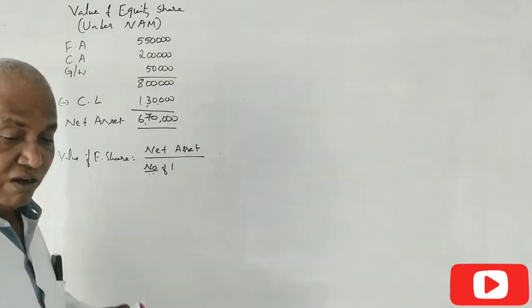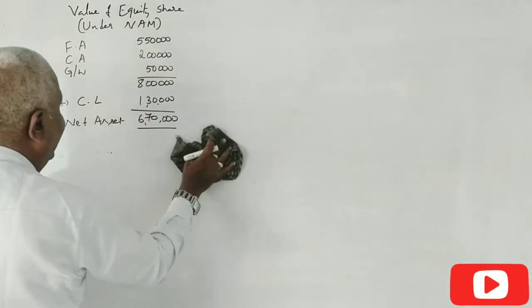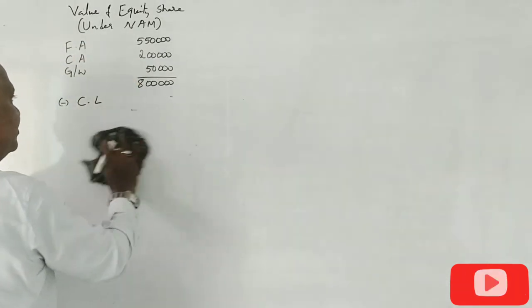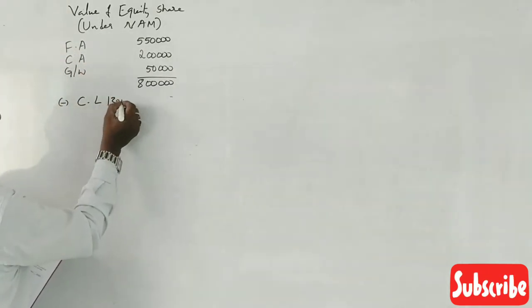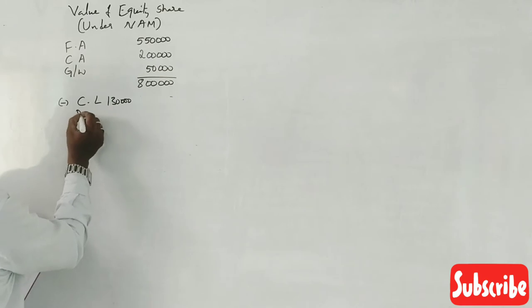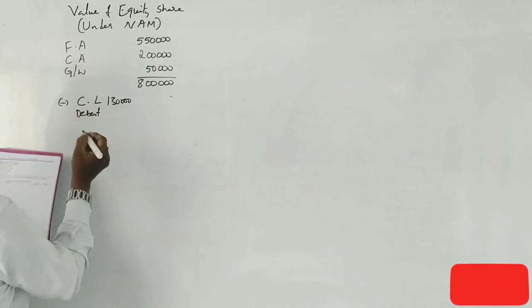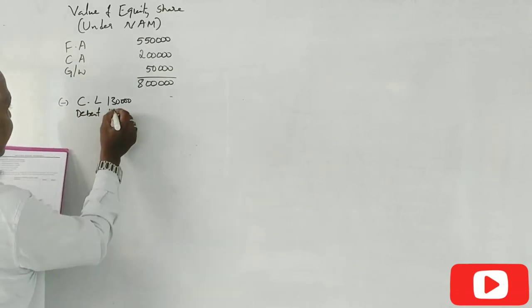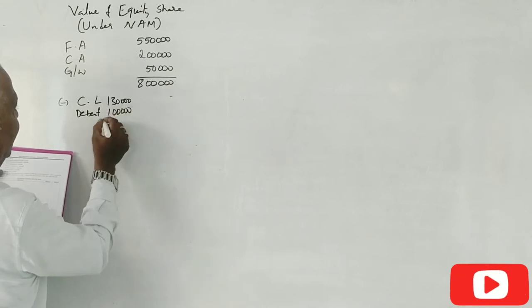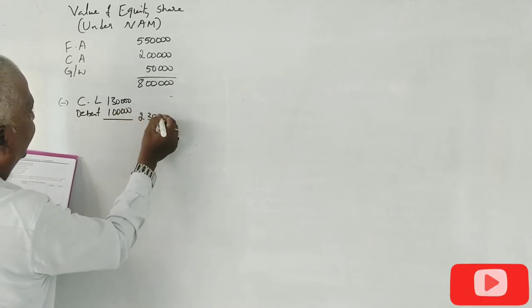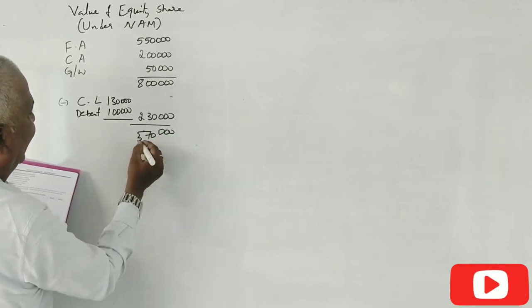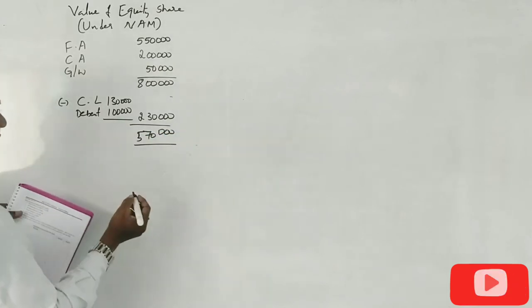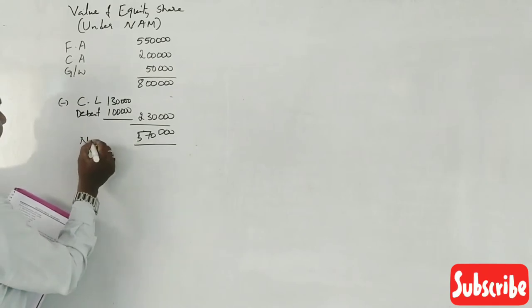What about debenture? Debentures is minus 1,00,000. The total liabilities is 2,30,000. Net assets is 5,70,000.